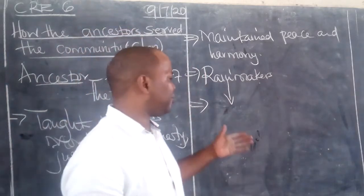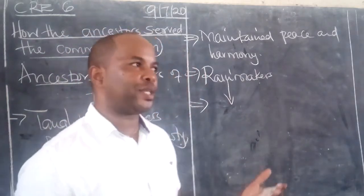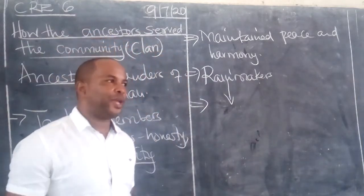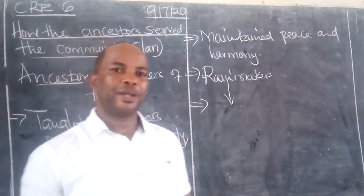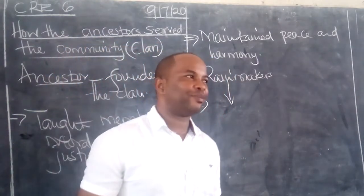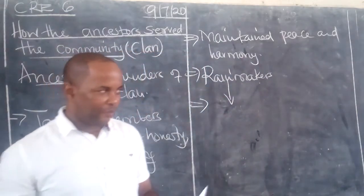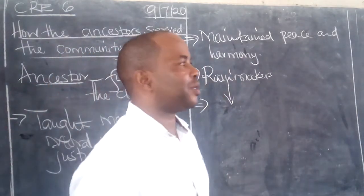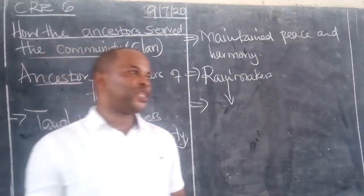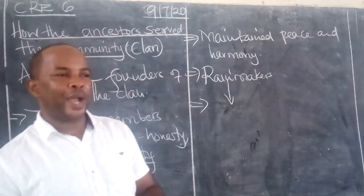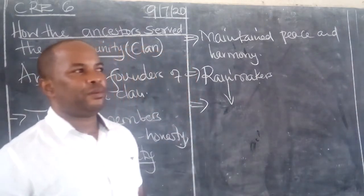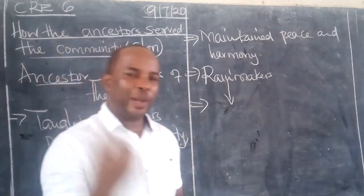These persons were perceived to advise members of the clan and also to punish the wrongdoers. Maybe through dreams, or other ways. Those who practiced witchcraft or anything done against the community — the ancestors would punish you.